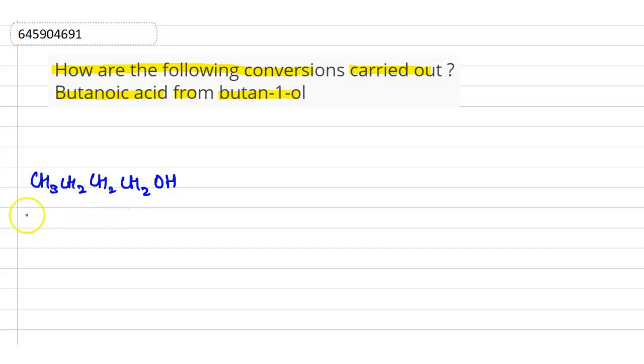Therefore their IUPAC name is butanol and that is react with good oxidizing agent. That is our K2Cr2O7 in the presence of sulfuric acid.